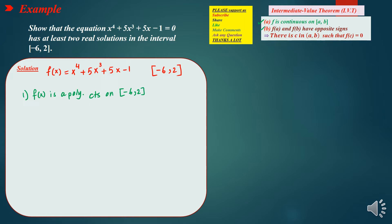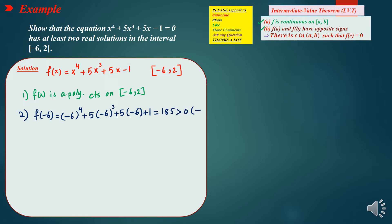The second condition requires finding the signs of f(negative 6) and f(2). Plugging in negative 6: f(negative 6) equals negative 6 to the 4th plus 5 times negative 6 cubed plus 5 times negative 6 minus 1. Using a calculator, this equals 285, which is greater than 0 — positive.